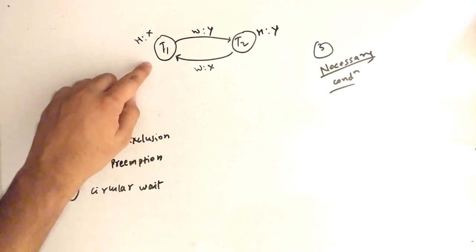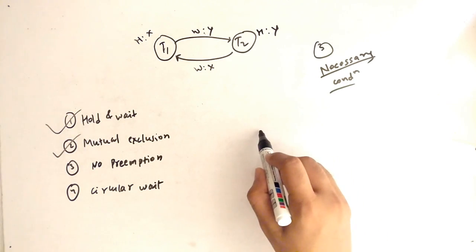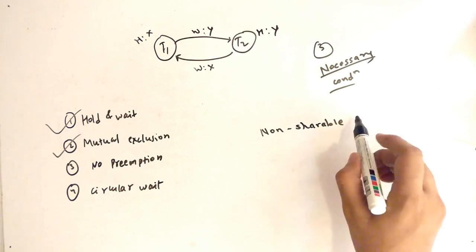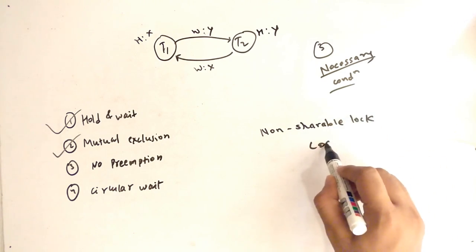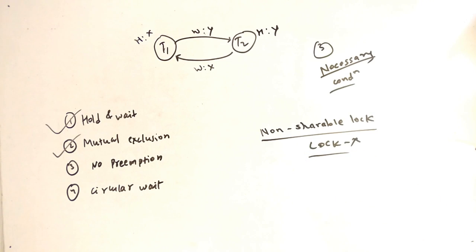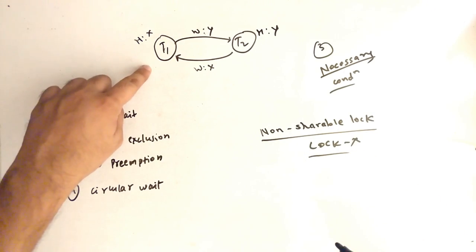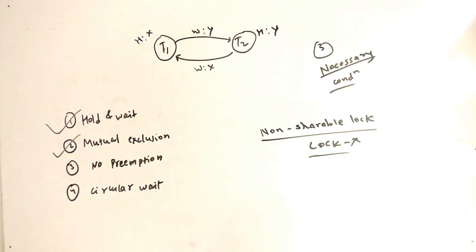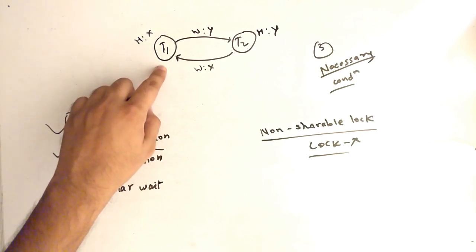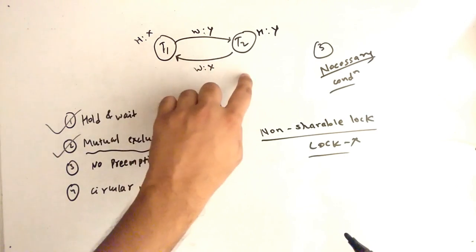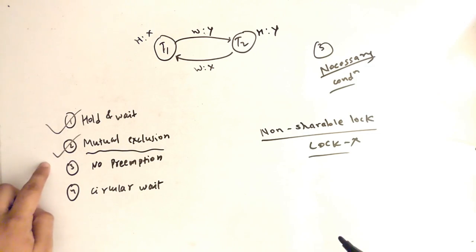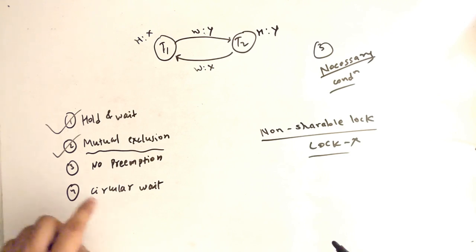The second necessary condition is mutual exclusion. This means that when a transaction has a non-shareable lock — which is similar to an exclusive lock X — and another transaction requests that same resource, it is said to be mutual exclusion. So when T1 has lock X and T2 requests the resource held by T1, this condition is called mutual exclusion.